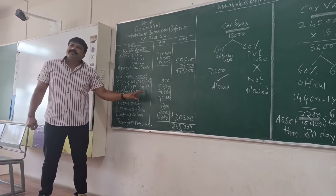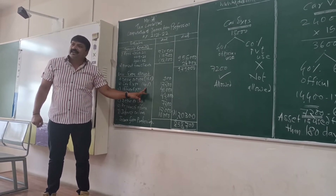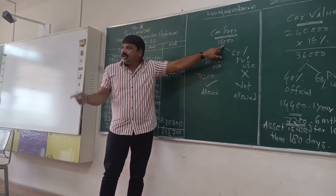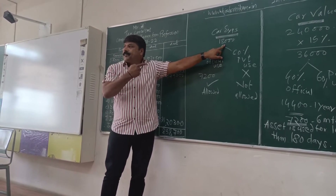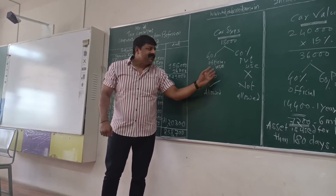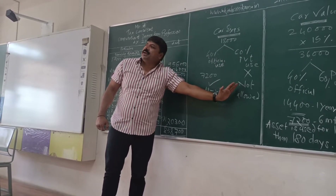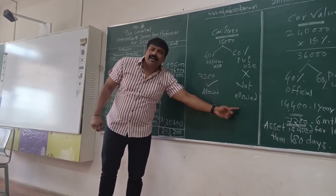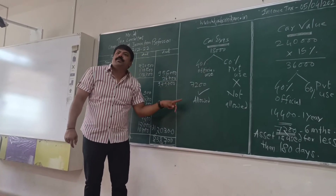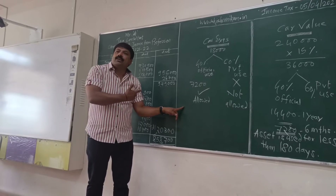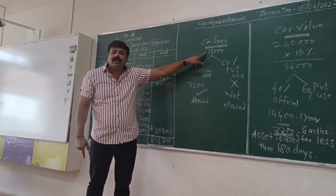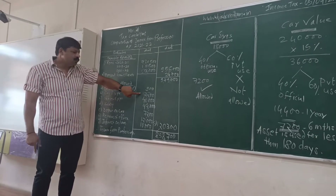Car expenses — I have taken 40%. Why 40%? Total car expenses are 18,000, but 60% is for private purposes. Private use is not allowed, so only 40% of expenses will be considered for tax calculation. So 40% into 18,000 equals 7,200.